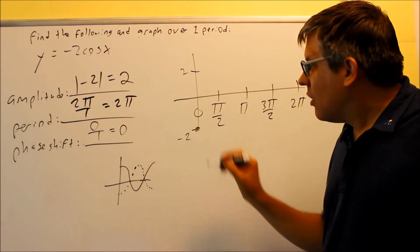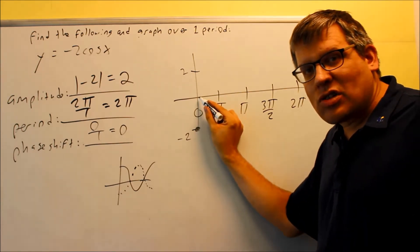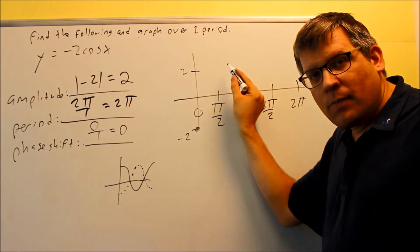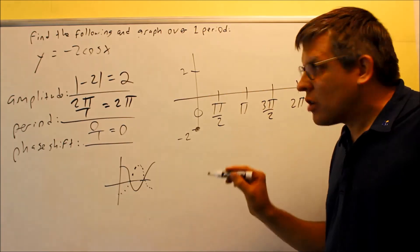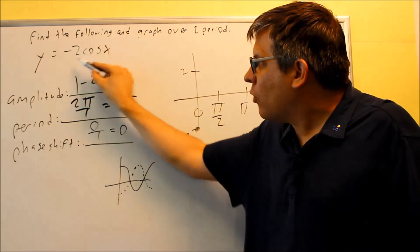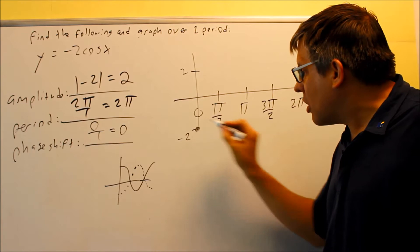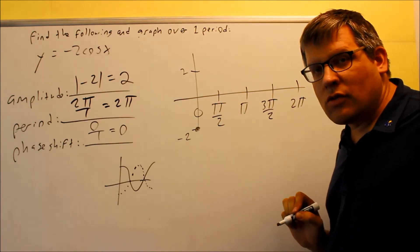Now sine graphs always will start on the x-axis. If the sine graph is positive, you go up. If the sine graph is negative, then we're going to go down. So for cosine graphs, all you're going to do is just start it at whatever number you have in front. So because it's negative 2, we start automatically there at negative 2.